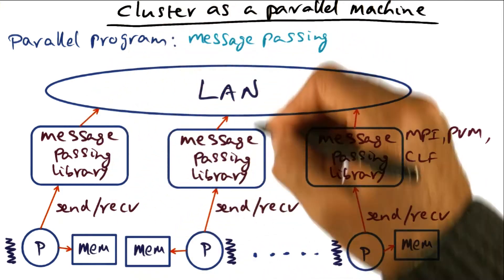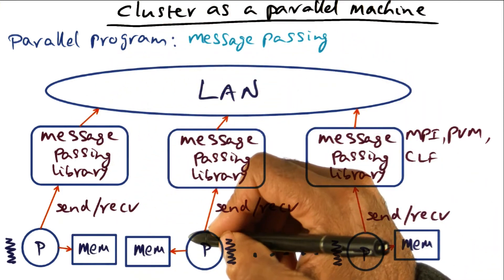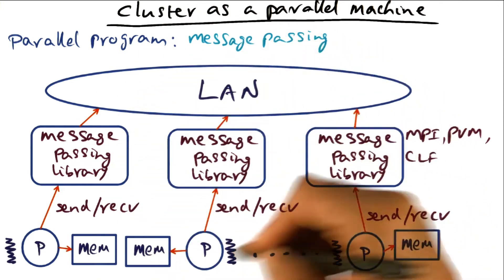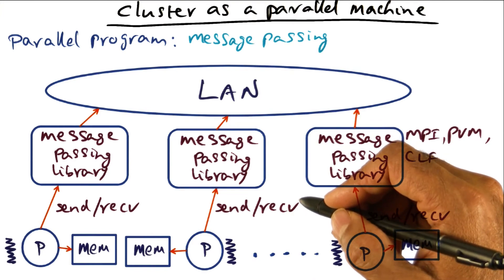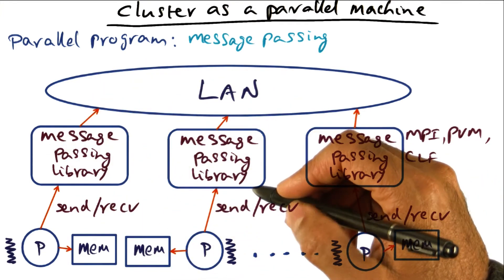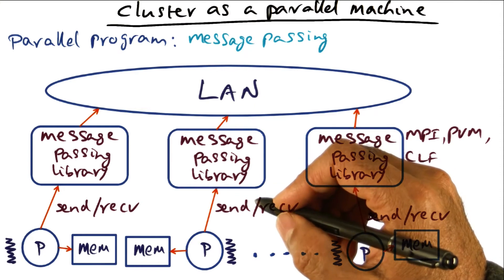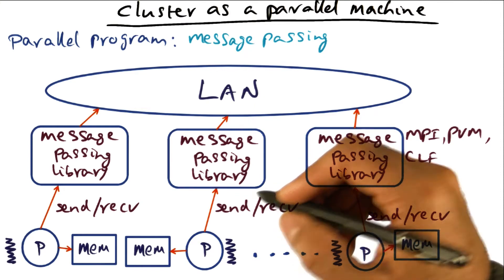This processor cannot directly reach into the memory of this processor because that is not the way the cluster is architected. So the message passing library is true to the physical nature of the cluster. That there is no physically shared memory.